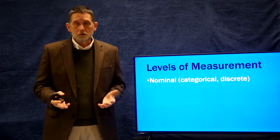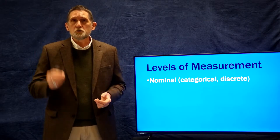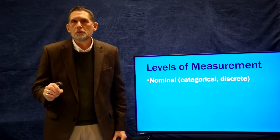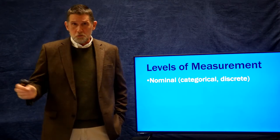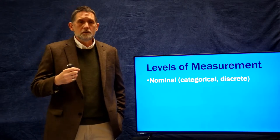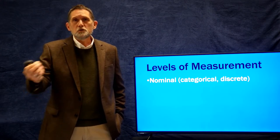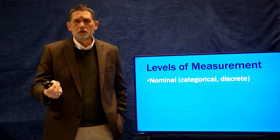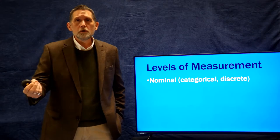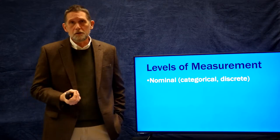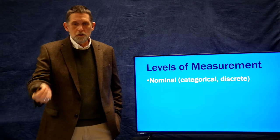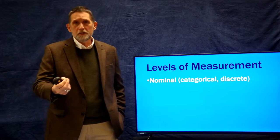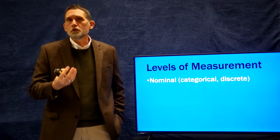Some anthropologists go so far as to say it's unethical to do statistics because you are assigning a number to someone — turning a human being into a number. But to me, that's an extreme reaction. Assigning a value is no different than calling someone 'male.' You can use a word or use a number — one means male. We describe and assign people to categories through words constantly.